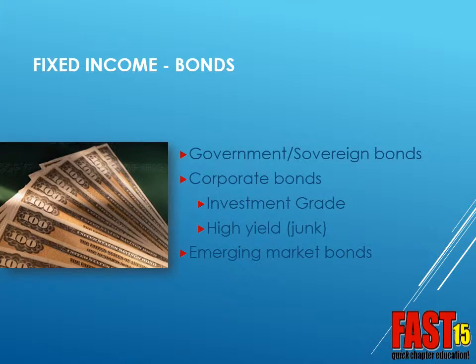Fixed income or bonds are another class of assets. U.S. government or sovereign bonds of developed countries are considered the safest. Next highest in safety is high-grade corporate bonds. High-yield bonds are issued by lesser-quality companies where the risk of default is higher. Just as with stocks, you can invest in emerging market bonds. As a whole, would you say bonds are less risky for loss of investment over stocks? In most cases, bonds are considered less risky, but they are not without risk, especially bonds with long maturities — 20 to 30 years — and bonds issued by companies with low or no credit ratings.